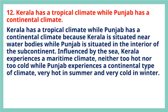Question 12: Kerala has a tropical climate while Punjab has a continental climate. Kerala has a tropical climate while Punjab has a continental climate because Kerala is situated near water bodies while Punjab is situated in the interior of the subcontinent. Influenced by the sea, Kerala experiences a maritime climate — neither too hot nor too cold — while Punjab experiences very hot summers and very cold winters.